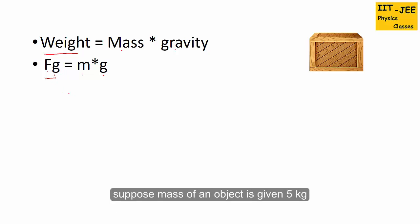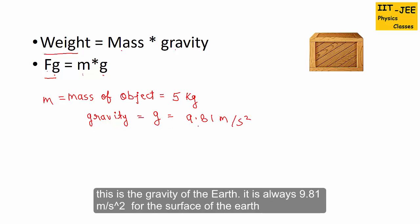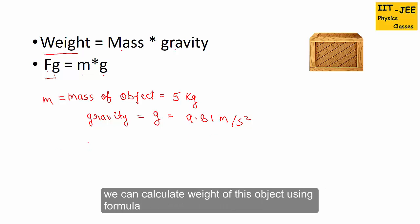Suppose mass of an object is given as 5 kg, and gravity of earth in standard value is 9.81 meter per second squared. This is the gravity of the earth, always 9.81 meter per second squared for the surface of the earth. We can calculate weight of this object using formula m times g.